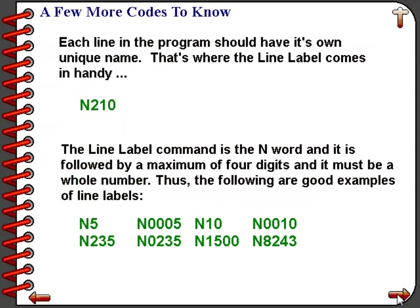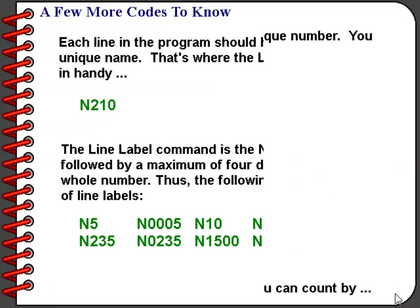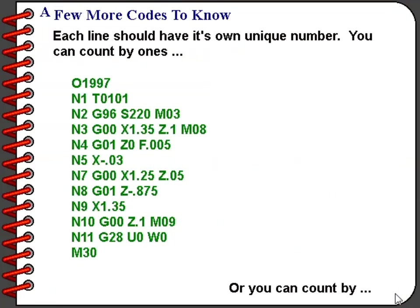Each line in the program should have its own unique name, just as each program has a unique name using the O-word. For the lines in our program, we can use the N-word, which specifies a line label. Notice in the example program that the O-word does not have a line number, nor does the M30.